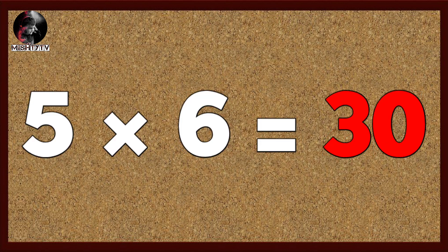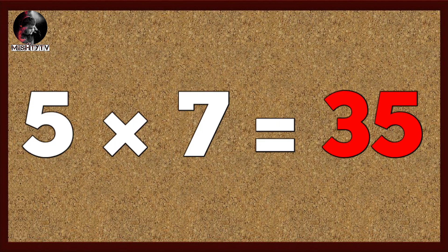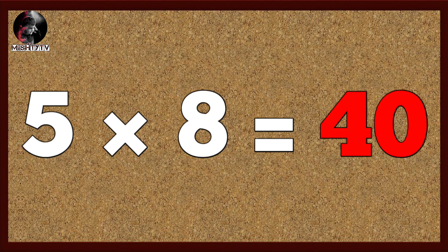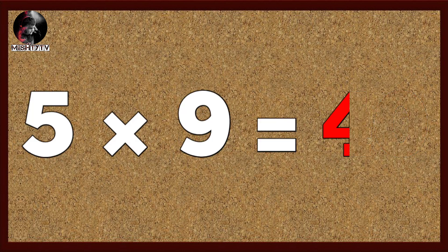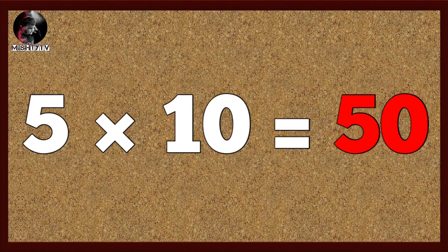Five six's are thirty, five seven's are thirty-five, five eight's are forty, five nine's are forty-five, five ten's are fifty.